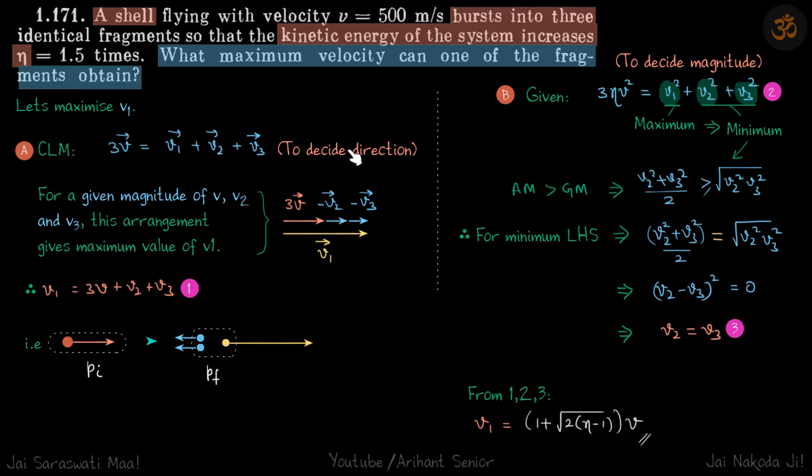So let's do the first part and decide the direction for v1 to have its maximum magnitude. You can imagine now that all these four are vectors and we need to maximize one of the vectors if other three vectors are known in magnitude.